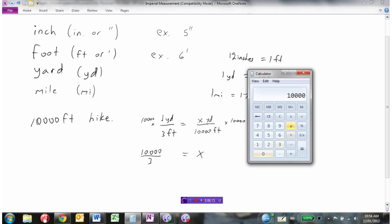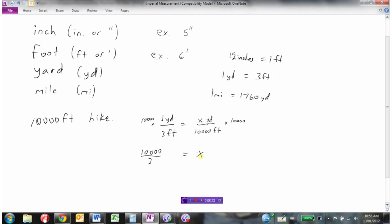Going to the calculator, 10,000 divided by 3, I get 3,333.33 yards. So I've now converted the hike from 10,000 feet to 3,333.33 yards.